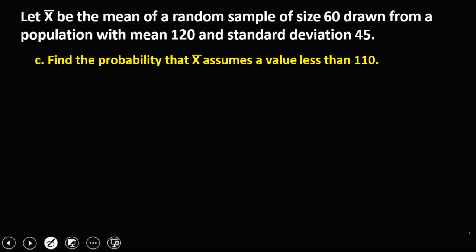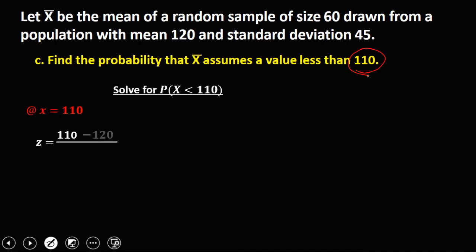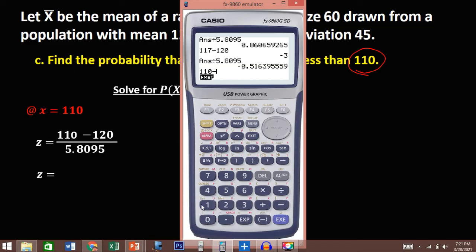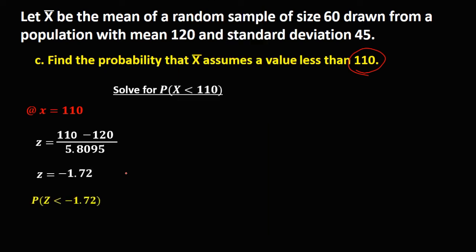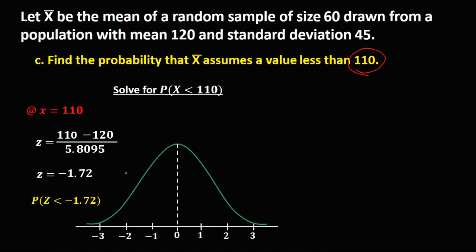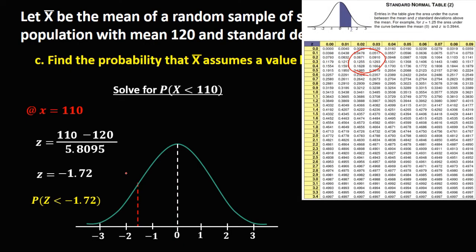Now find the probability that the sample mean is less than 110. Convert 110 to a Z-score: Z = (110 − 120) / 5.895 = −1.72. So P(Z < −1.72). From the Z-table, the area from the mean to −1.72 is 0.4573.